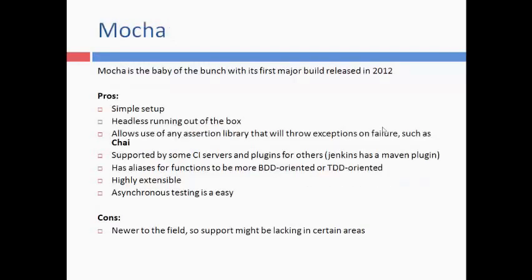In 2012, a new testing framework was launched — Mocha — and it solved all the problems found in QUnit and Jasmine. It has a simpler setup, though it comes with less out of the box. You can use Chai as your assertion library. It is very supportable, has many CI service plugins available, is highly extensible, and asynchronous testing is easy. The only drawback is that it's newer to the field, so support may be lacking in certain areas.